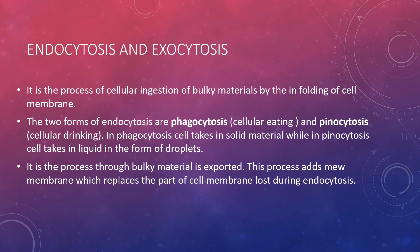The benefit of exocytosis is that it increases the cell membrane. When the cell intakes bulky material, it takes a membrane around the bulky material. When that material is exported, it comes near the cell membrane, and after some time the membrane around the bulky material is removed and added into the cell membrane. That is why the bulky material comes out from the cell and the size of the cell membrane increases.